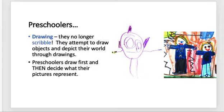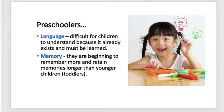Other things we notice about preschoolers with their drawing: they're no longer scribbling for the sake of scribbling — they're actually trying to draw things that depict and represent what they're experiencing in the world. What's interesting is that preschoolers tend to just go for it, draw a picture, and then after the fact decide what their picture represents. They might stick with the same story or change it up — oh, my picture is this, wait, my picture is this — and that's totally fine, very common with preschoolers.